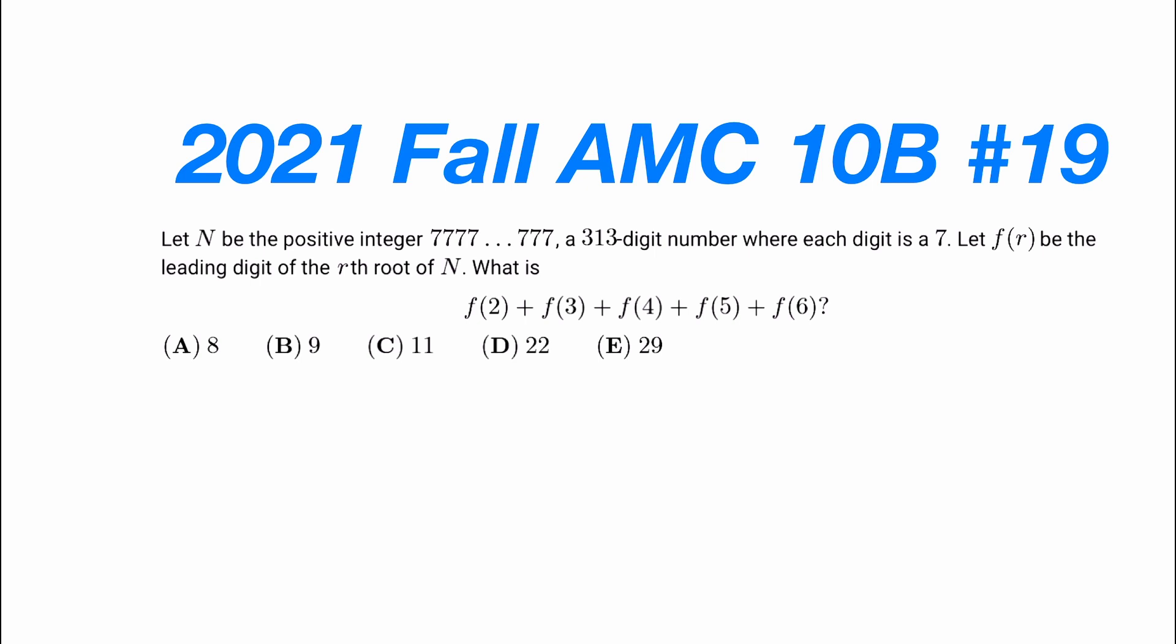In this problem, it states that N be the positive integer 777...777, a 313 digit number where each digit is a 7. Let f(r) be the leading digit of the rth root of N. And it wants us to find the value of f(2) + f(3) + f(4) + f(5) + f(6).